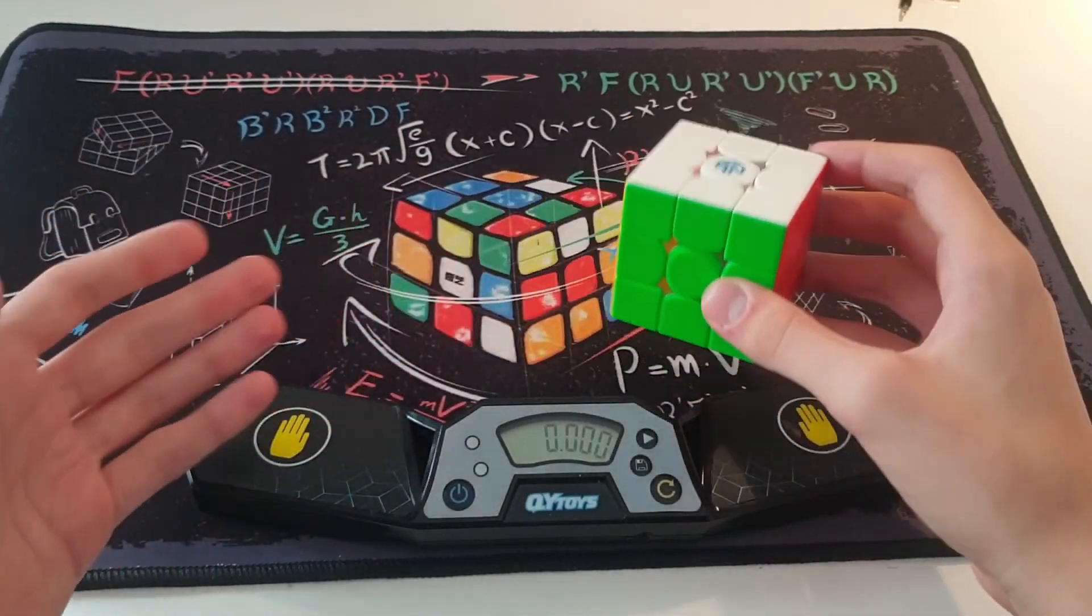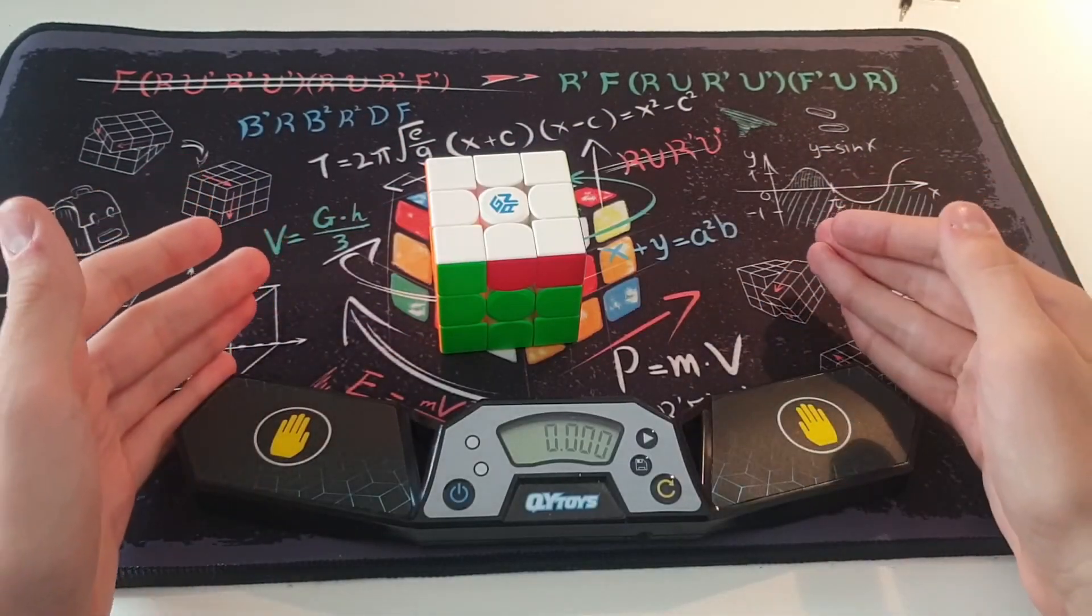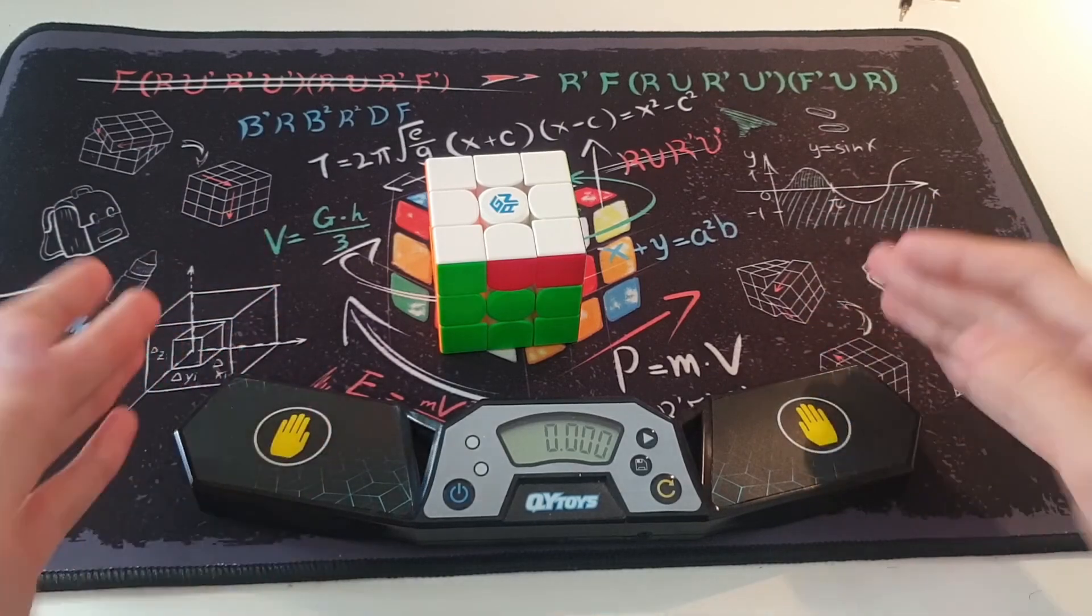So to explain what that means, I have to explain what a plus 2 is. A plus 2 means a 2 second penalty added onto your solve, and there can be a number of reasons for this.